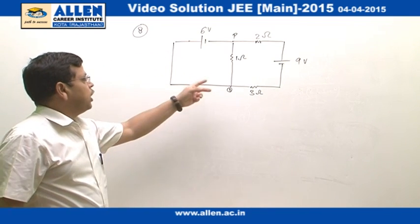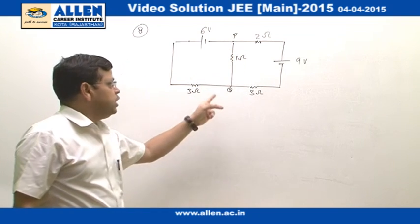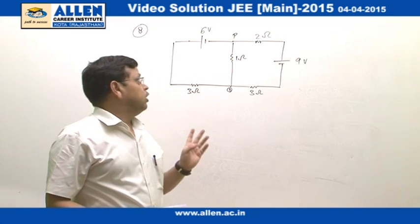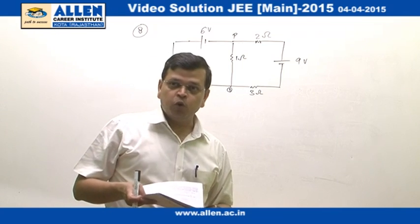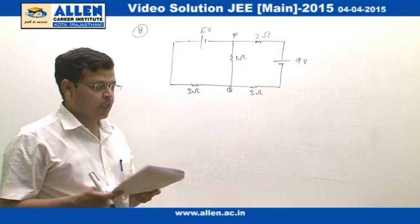And we have to find the current flowing in the wire PQ, or we have to find whether it is going from P to Q or from Q to P, as well as the magnitude of the current.